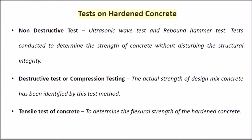Tests on Hardened Concrete. Non-Destructive Tests include the Ultrasonic Wave Test and Rebound Hammer Test — conducted to determine the strength of concrete without disturbing its structural integrity. Destructive Test or Compression Test: Used to identify the actual strength of the design mix concrete. Tensile Test of Concrete: Used to determine the flexural strength of hardened concrete.